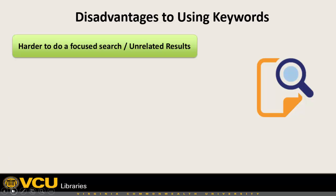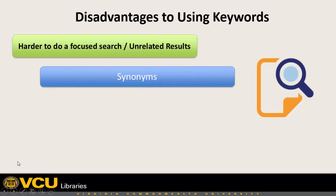The other issue you're going to have is synonyms. As you're doing searches, the terms you're using may be thought of one way, but within the English language they may be used in a very different way. For example, when it comes to nursing — nursing can be a profession, but it also can be a description for how you feed a baby. You have to keep those things in mind when you're wondering why you're getting so many results and so few of them apply to what you're looking for.